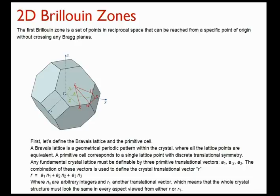Any fundamental lattice must be definable by three primitive translational vectors a1, a2, and a3. The combination of these vectors is used to define the crystal translational vector r, such that r equals a1·n1 plus a2·n2 plus a3·n3, where n are just arbitrary integers which show the size of our lattice.